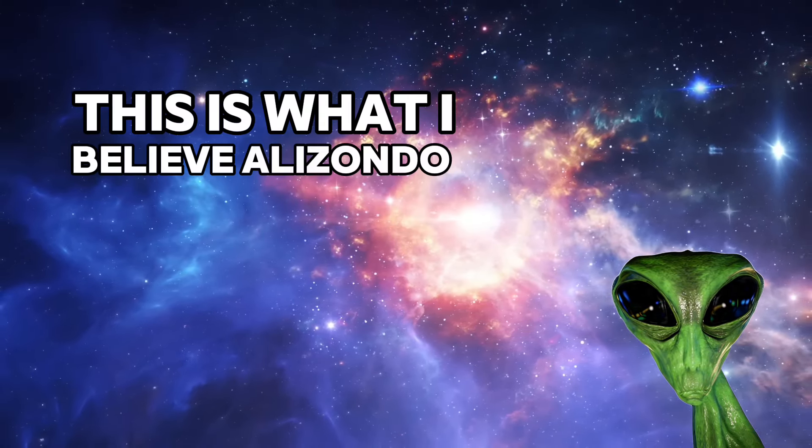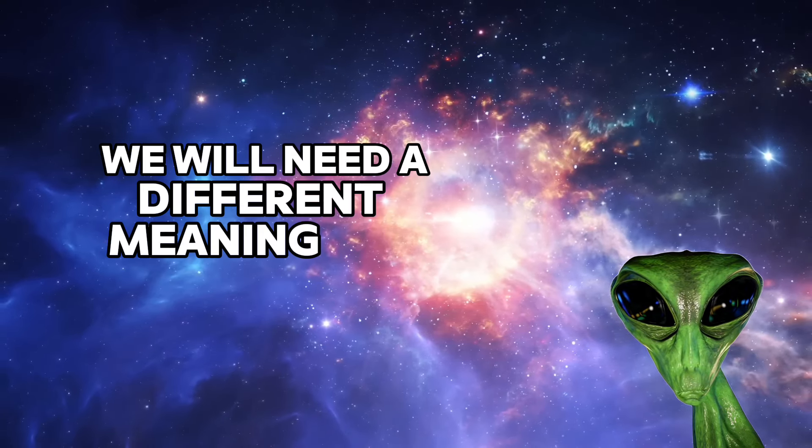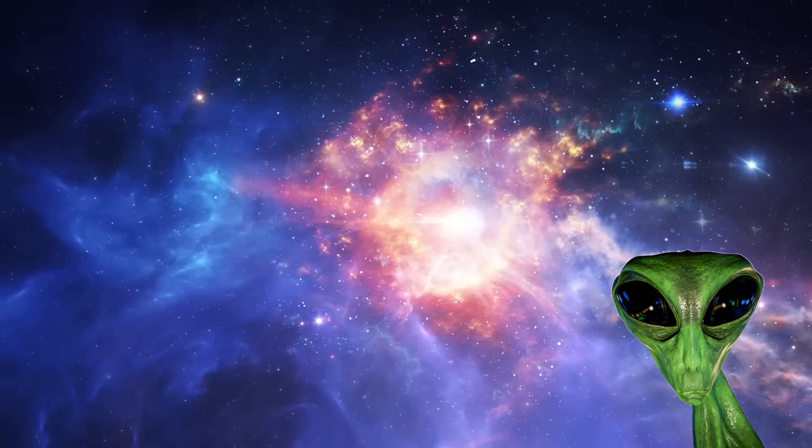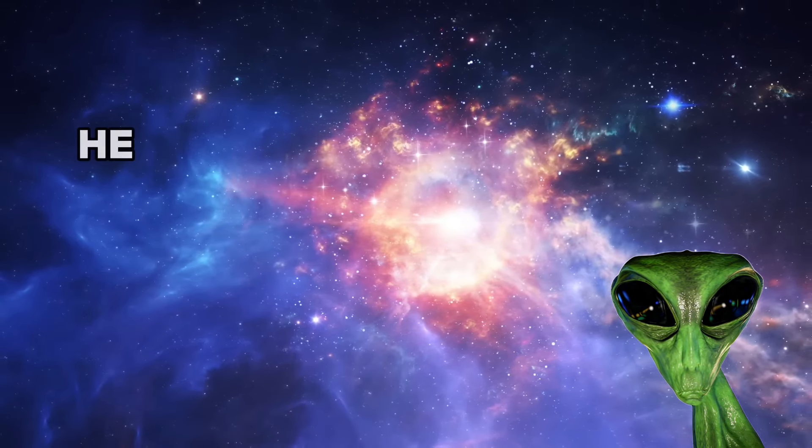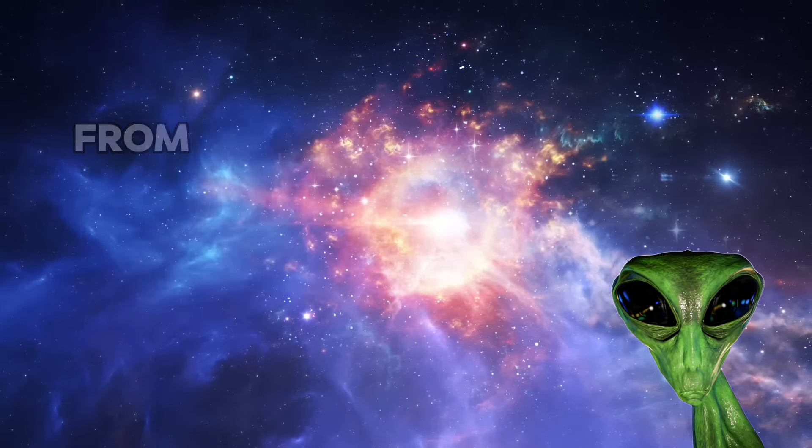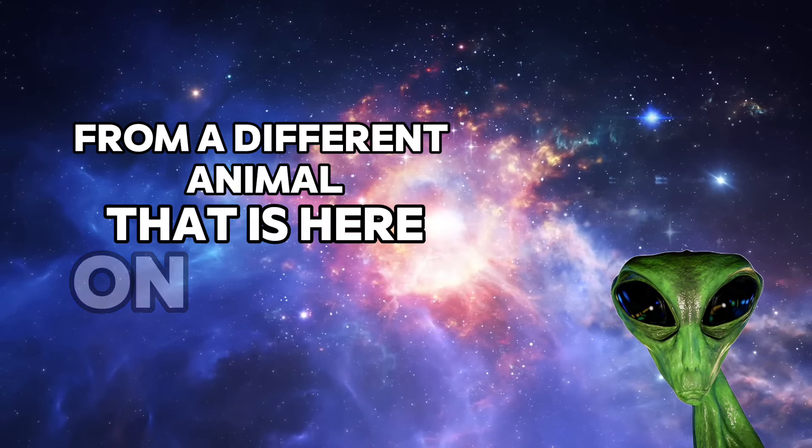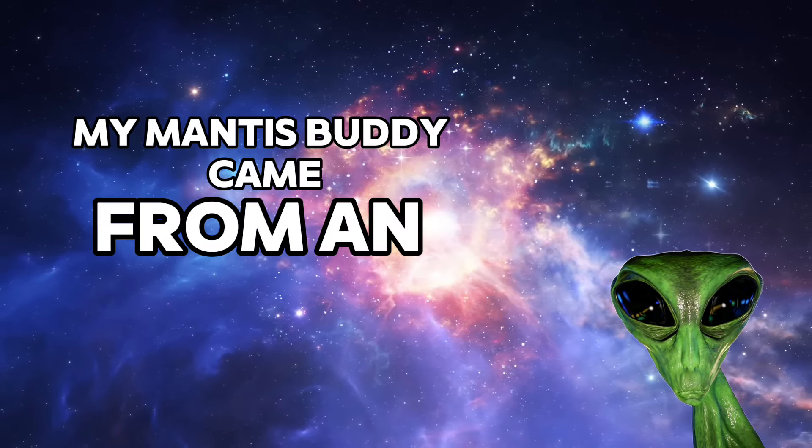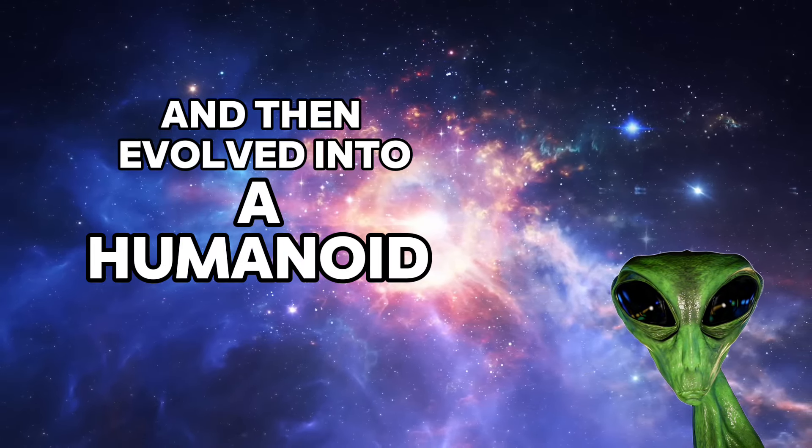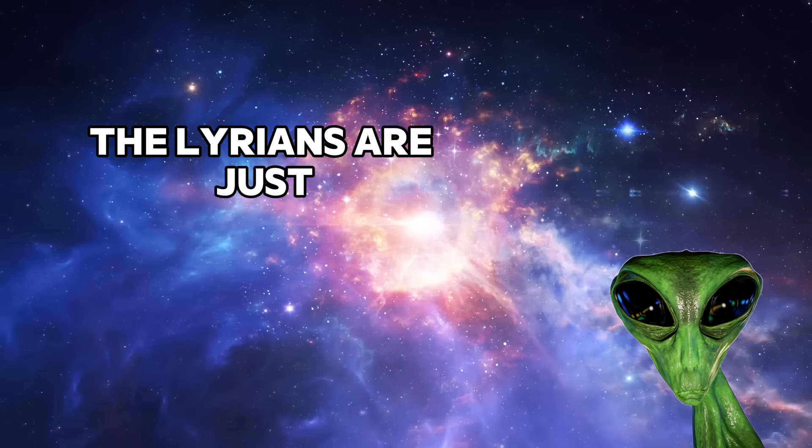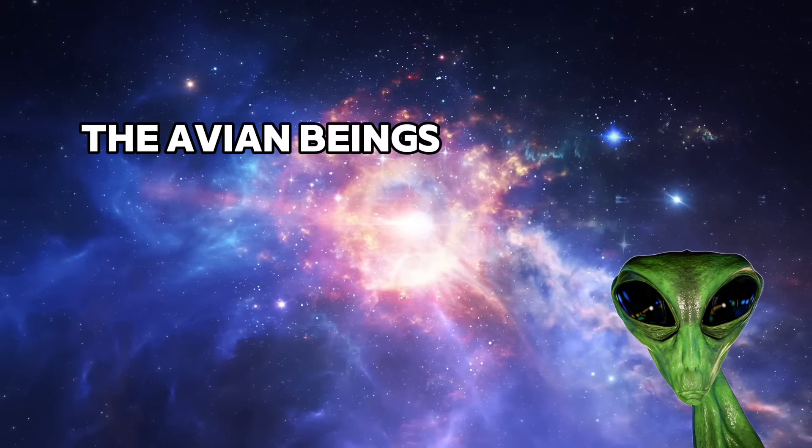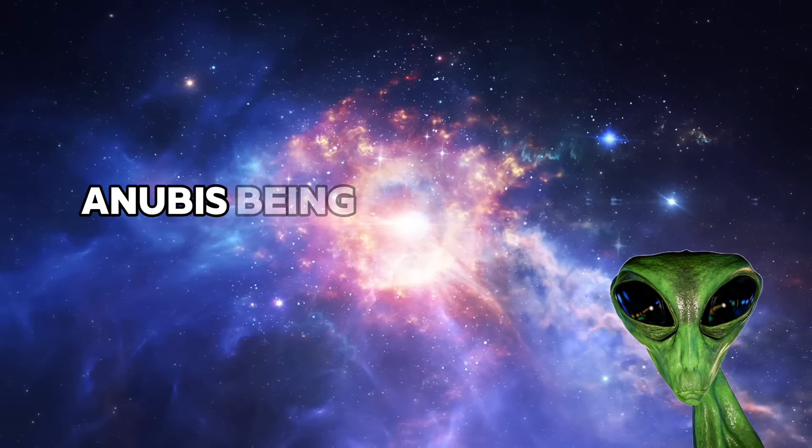This is what I believe Elizondo meant when he said we will need a different meaning for the word humans, because Klaatu confirmed this. He said that the Earth goes through different cycles where a different version of humanity evolves from a different animal that is here on Earth. My mantis buddy came from an Earth where praying mantis became the dominant species and then evolved into a humanoid form. The Lyrians are just the humanoid cat version of humanity that evolved. We are the ape version. The avian beings are the bird version. Anubis being the dog version.